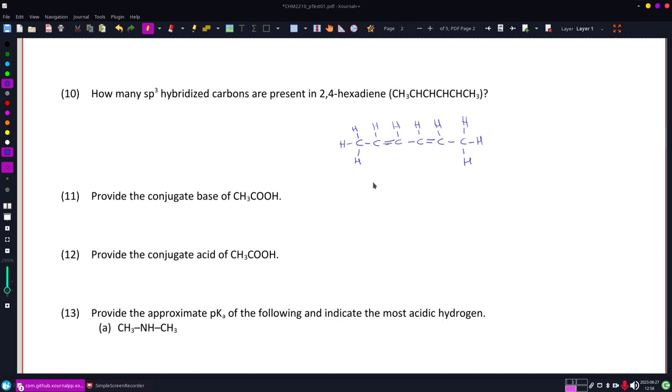All right, this wants to know how many sp3 hybridized carbons we're looking for. We're looking for carbons with four bonds or four bonding groups, so the only ones that fit that identity, that very first one and that very last one.